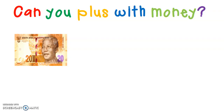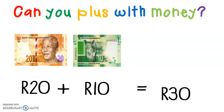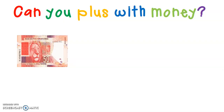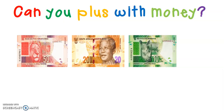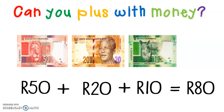Now we've got notes. 20 Rand plus 10 Rand — so we're going to say 20 Rand plus 10 Rand equals 30 Rand. Again, do we have a 30 Rand note? No, we don't — we have a 20 and a 10 Rand note. Here we have 50 Rand, 20 Rand, and a 10 Rand. So 50 Rand plus 20 Rand plus 10 Rand equals 80 Rand.